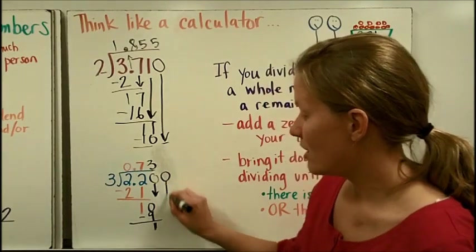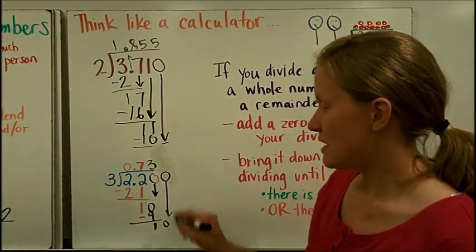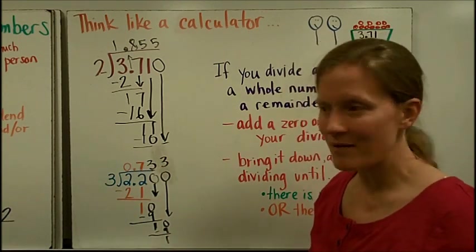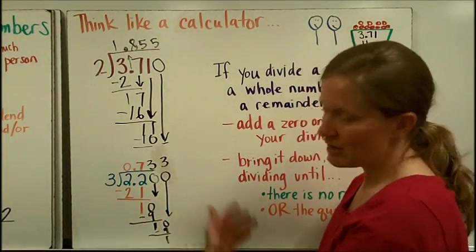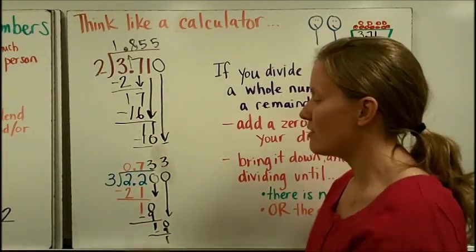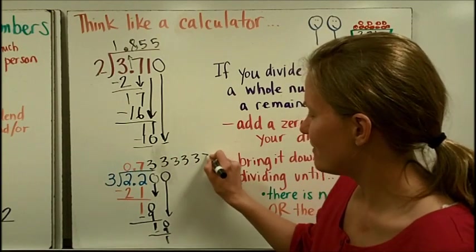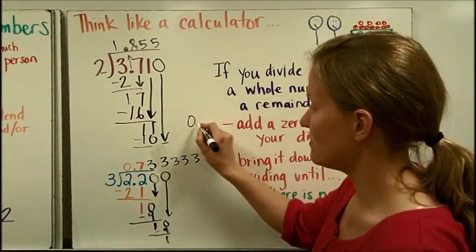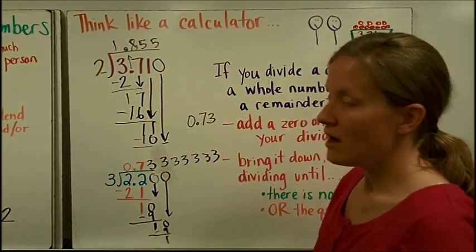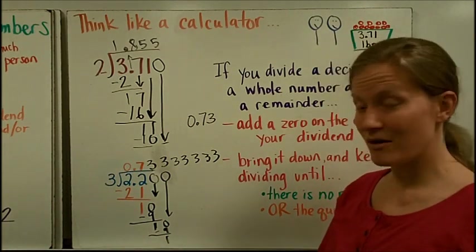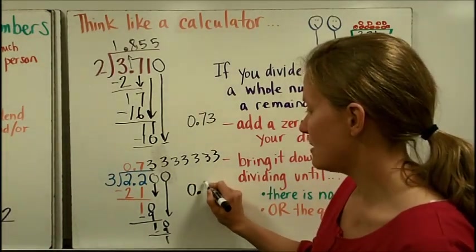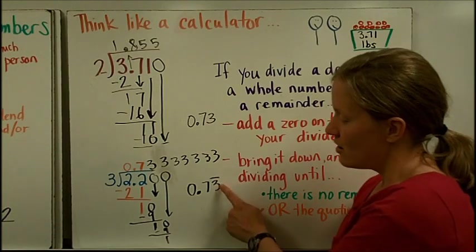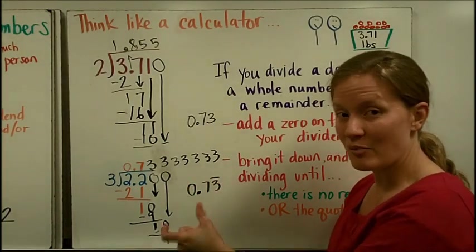So I can add another zero. Bring it down. 3 goes into 10 three times. 3 times 3 is 9. I get a 1. Guess what? That's going to keep happening. I'm going to do 3 times 3 is 9. Get a 1. Get a 1. Keep going. Keep going. So the calculator would say this. We are going to shorten that. You could either round it to the hundredths place and turn it into 0.73. That's the rounded answer. But the exact way to write this answer is 0.7 and 3 repeating. And you put this line over top of the 3 to represent the part that will repeat.